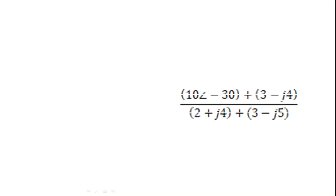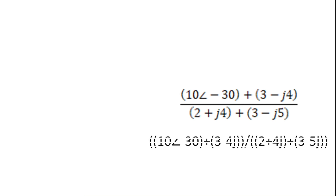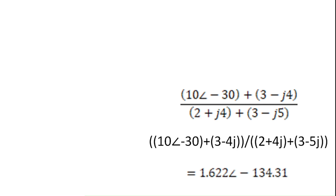Now in the given problem, the expression is: 10 at an angle of minus 30, plus (3 minus j4), divided by (2 plus j4), plus (3 minus j5). When entering this into your calculator you must be careful with the notation.